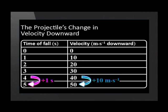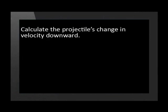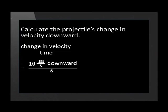In other words, the velocity changes at 10 meters per second every second. To recap: the projectile's velocity is downward for the whole motion, and the velocity increase is also downward. The projectile's change in velocity per time is 10 meters per second downward per second.